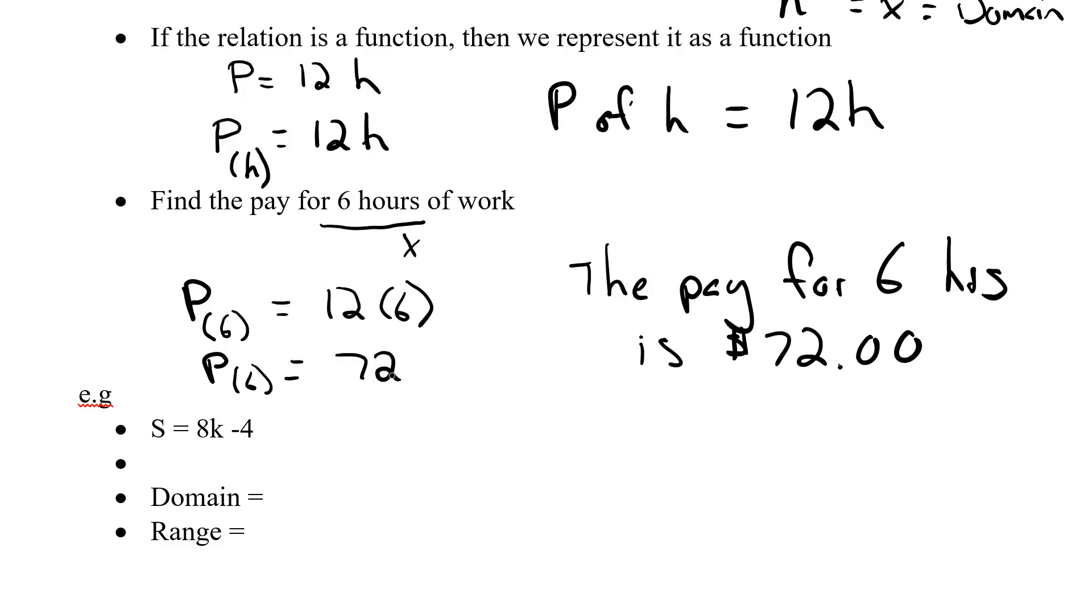Let's try another example, kind of working from a different perspective. Here's my formula: S equals 8k minus 4. Let's write this in function notation. We start the same way. S, open up some brackets, put down the x variable, which is in this case k. S of k equals 8k minus 4. I just simply take the formula and rewrite it with a subscript of my other variable.